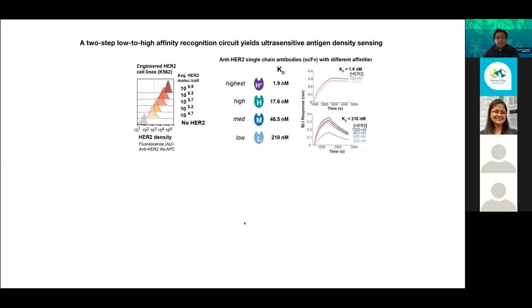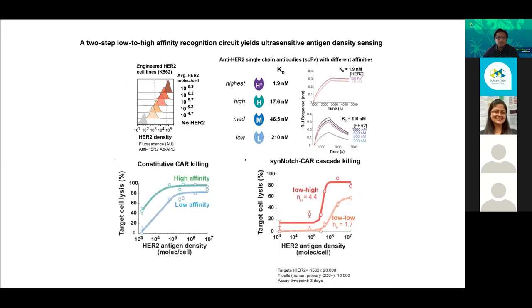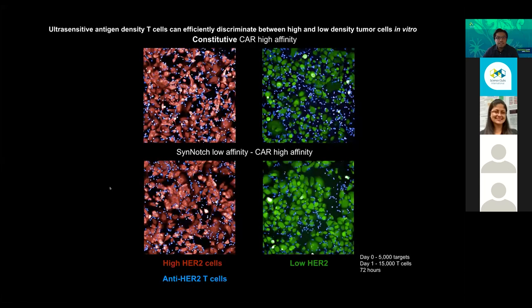I don't have time to go into all the details, but with this circuit approach you get a sigmoidal response. This is a quantitation using different target cell lines that have different levels of this protein, measuring the amount of killing you get when you put these circuit T-cells in — compared to what happens with the regular T-cells we had before, where independent of how sticky the receptors are there is no discrimination.